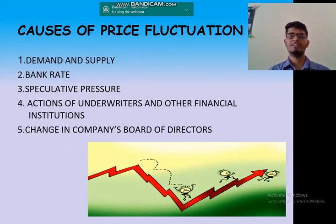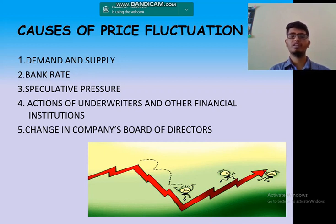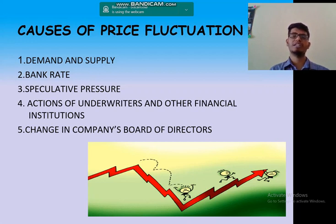There are fluctuations in the stock market, as you have seen in the charts. The causes of price fluctuation are: demand and supply of the stock, and the bank rate — repo rate and reverse repo rate — which directly affect investment, savings, and lending, and thereby the stock market. Speculative pressure: speculators play a game in the stock market, causing demand and supply factors to vary, making them a reason for fluctuations. Actions of underwriters and other financial institutions: underwriters sell their underwritten shares when prices move, causing stock prices to fluctuate.